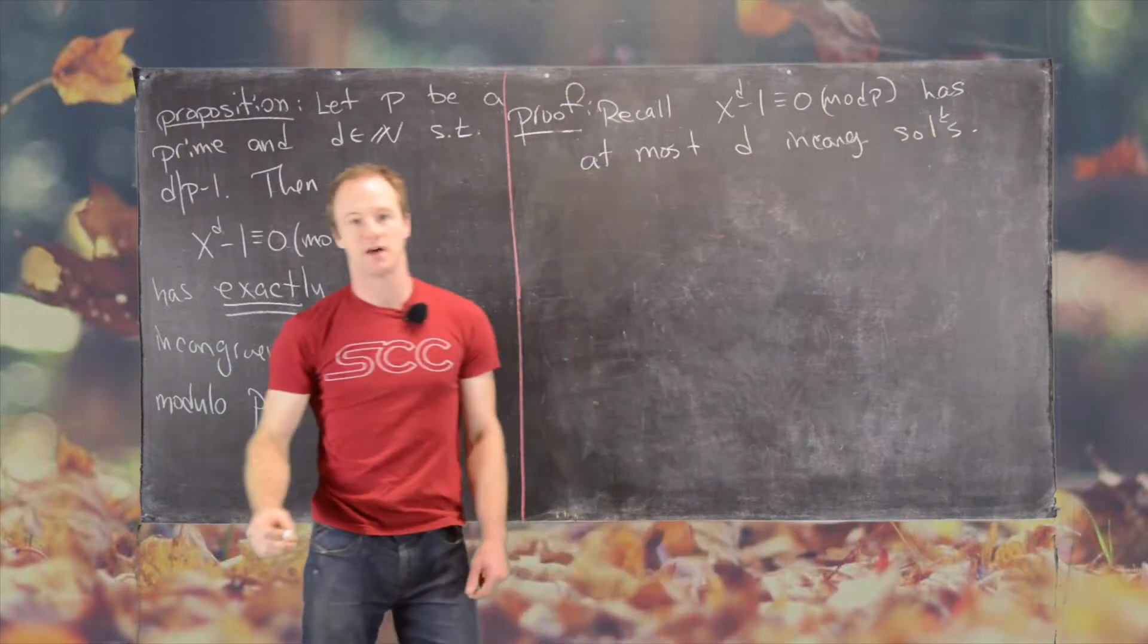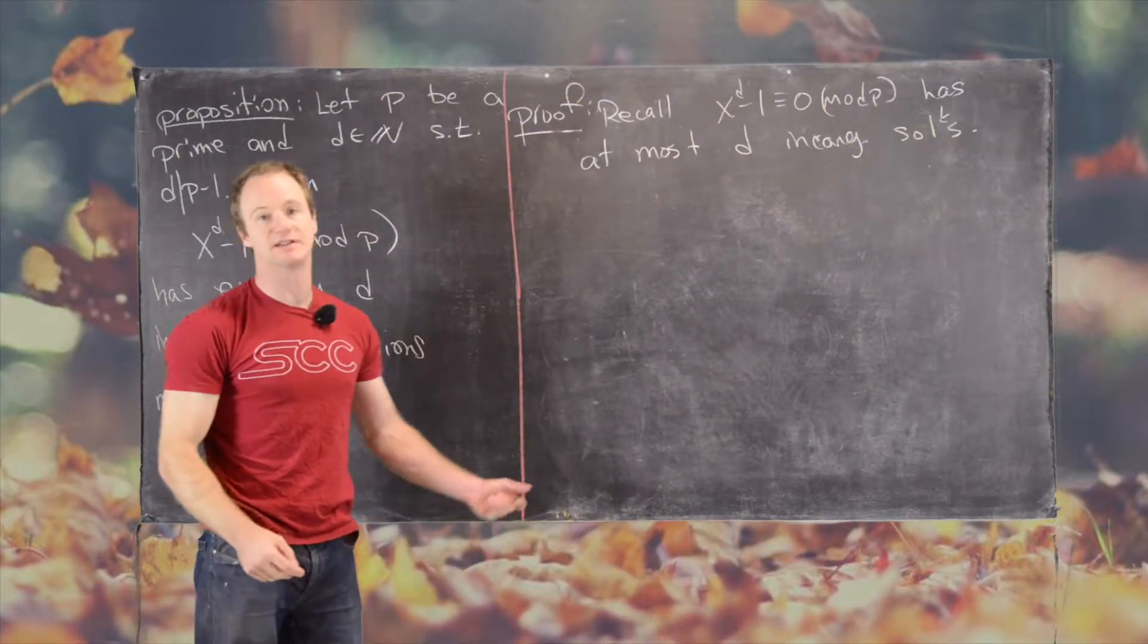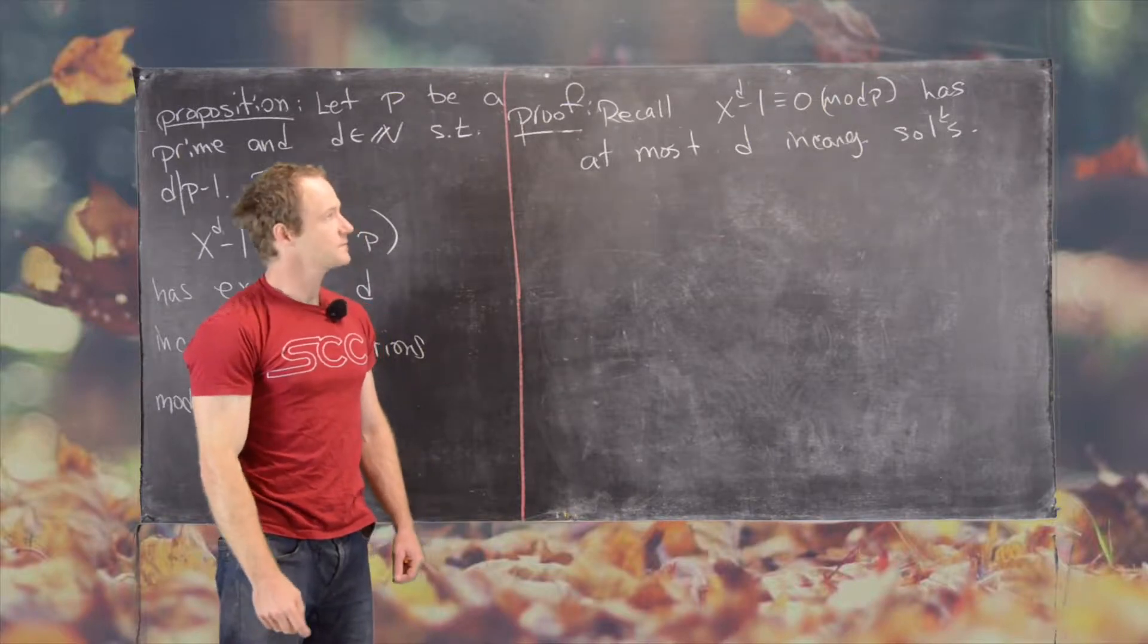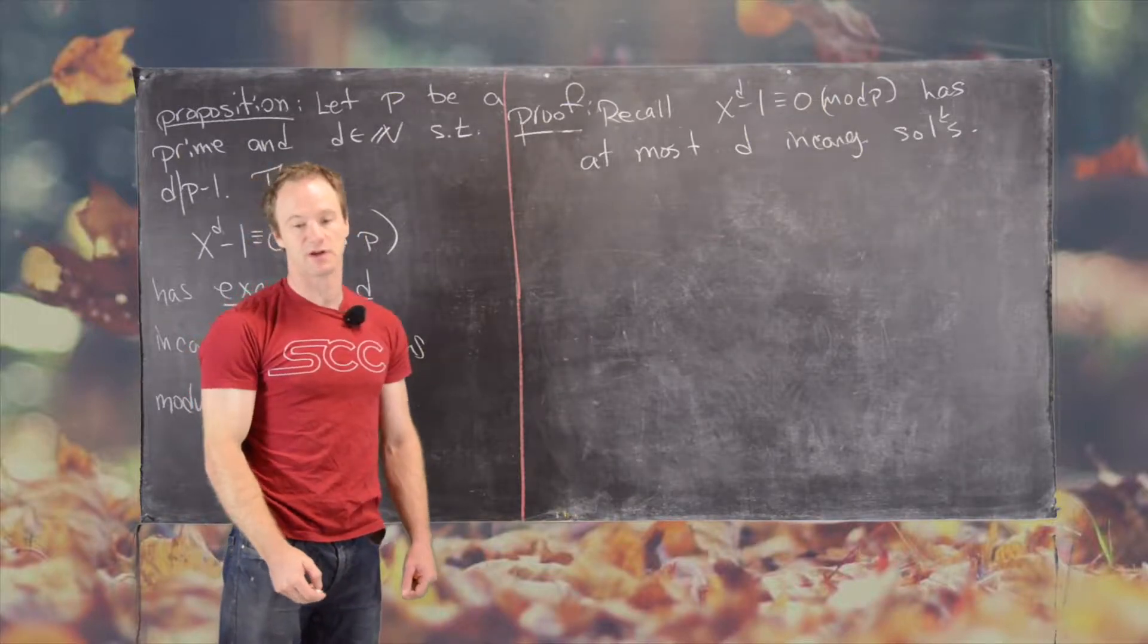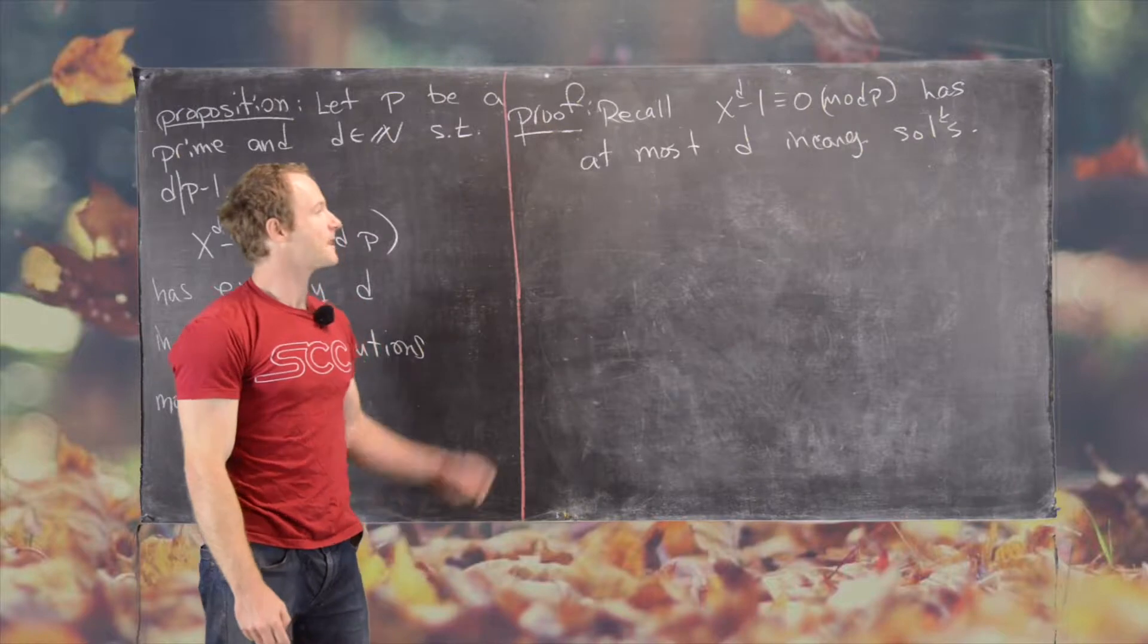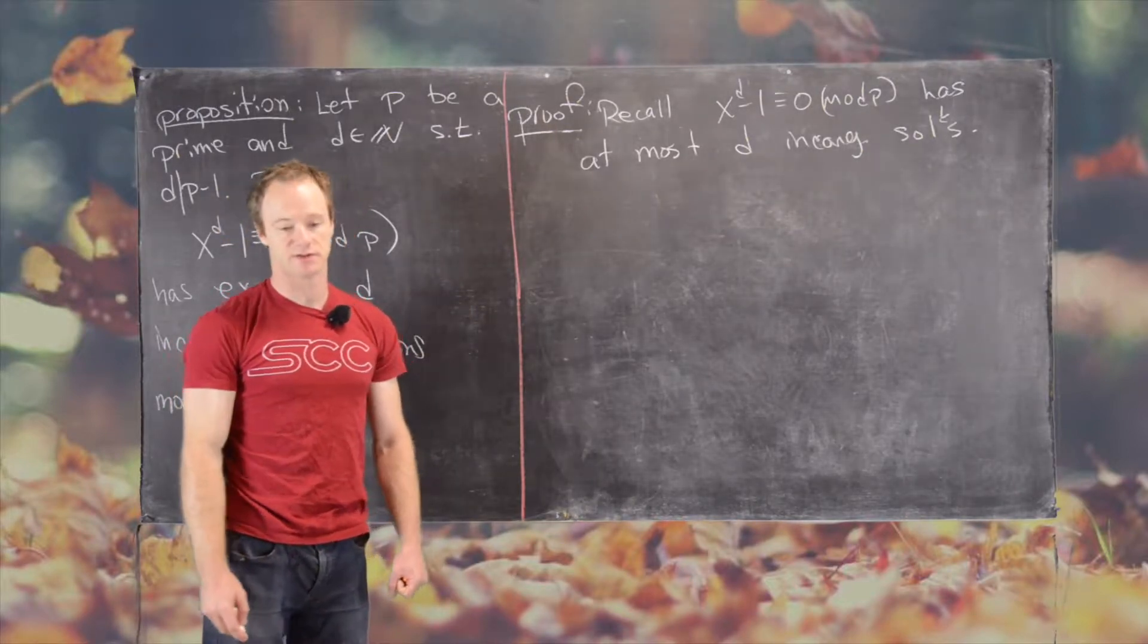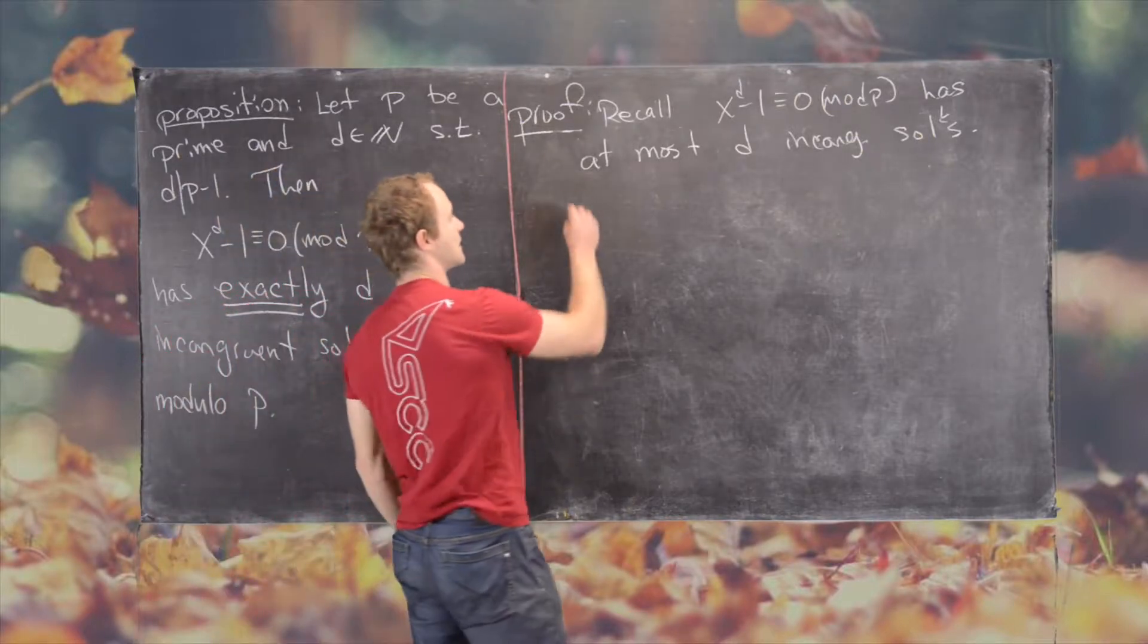And this is a fact that's true for prime numbers, but maybe is not true all of the time for composite numbers if you're working modulo a composite number. So that's our first step, to notice that we have at most d incongruent solutions. And now we want to do the following.